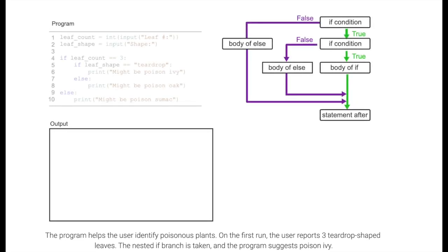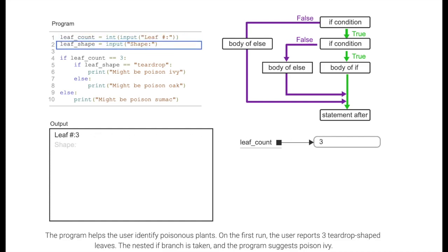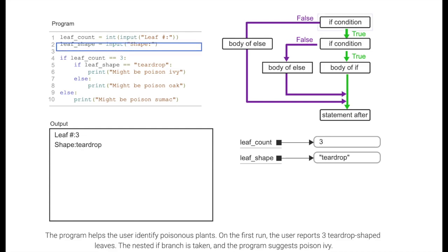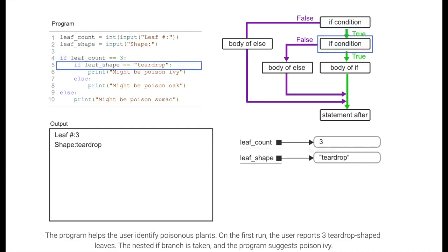The program helps the user identify poisonous plants. On the first run, the user reports three teardrop-shaped leaves. The nested if branch is taken, and the program suggests poison ivy.